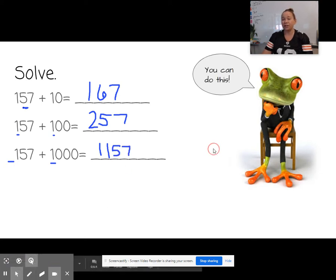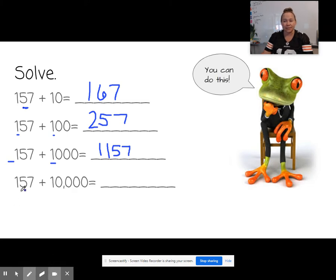So far, how about 157 plus 1,000? We're adding 1 to our 1,000s place, which would be all the way out here. So we would end up with 1,157. Okay, let's try another one. Now, 157 plus 10,000. Well, we're going to add our 10,000 all the way out here. And the 157 would stay the same. So 10,157. Do you see a pattern here?